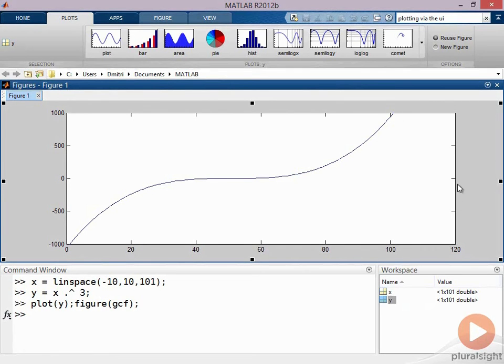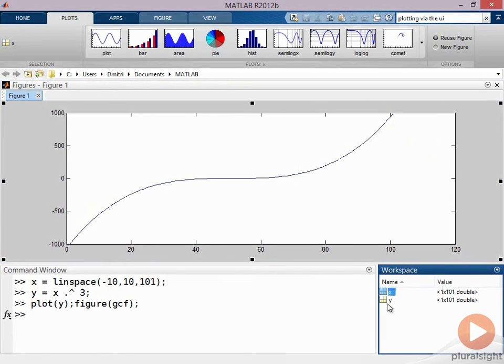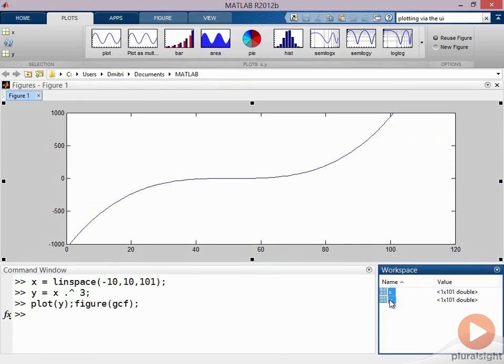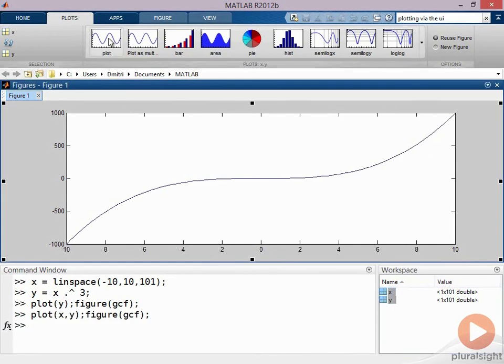To fix this, I need to select both x and y. So I hold the shift button, or you can hold the control button, and select both x and y. Now do exactly the same plot thing and you'll see that now the values range from minus 10 to 10.